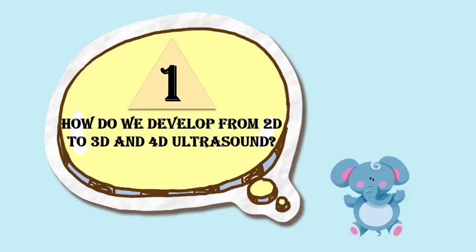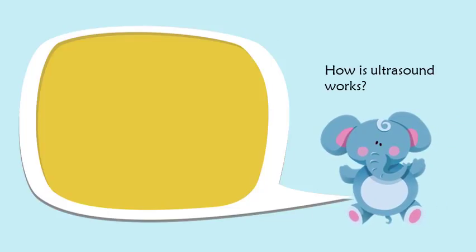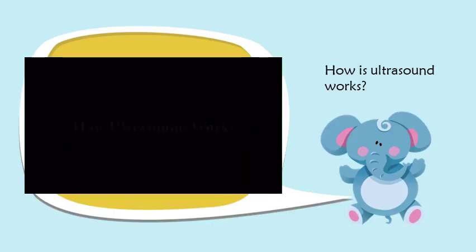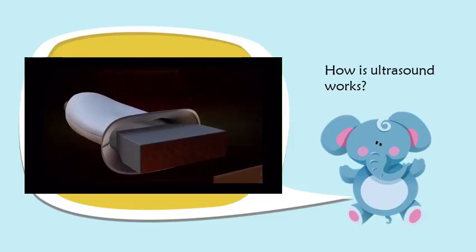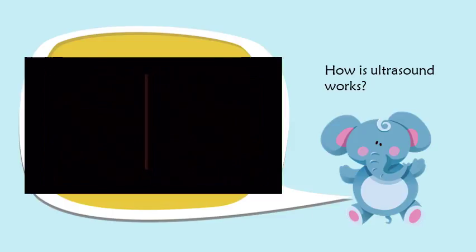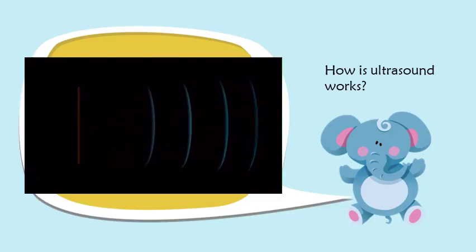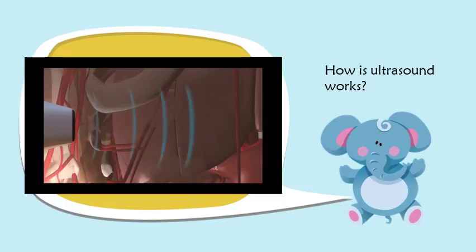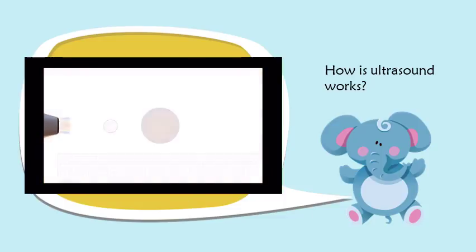How do we develop from 2D to 3D and eventually 4D ultrasound? Sound waves produced by a piezoelectric transducer are emitted into our body, and once the type of tissue is changed, sound waves would be reflected as echoes. The transducer receives these echoes and turns them into electrical pulses, which are processed and transformed by an ultrasonic scanner to become digital images.